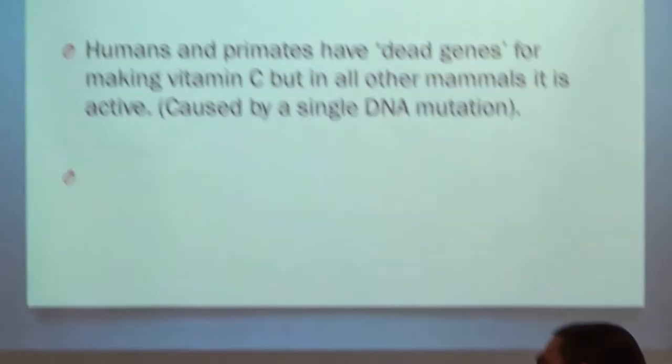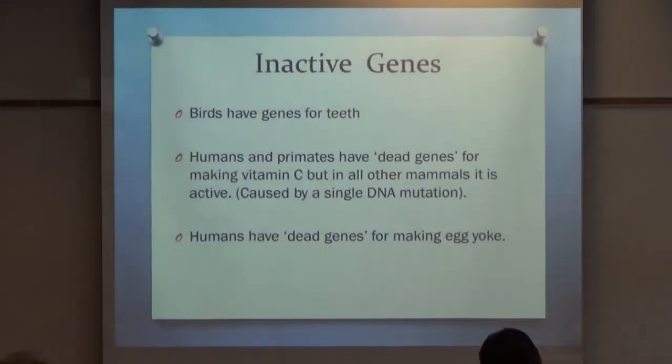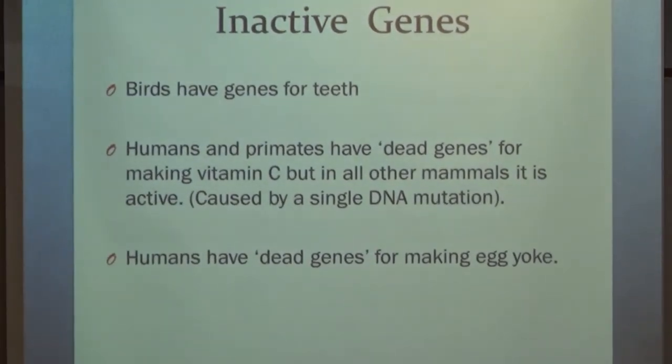And, probably the best example I know of, humans have dead genes for making egg yolk. Again, another vestigial remnant of our reptilian ancestors. So, why would an animal that develops in a womb have all the capability and structures for making eggs? It's something we've inherited evolutionarily from our ancestors.